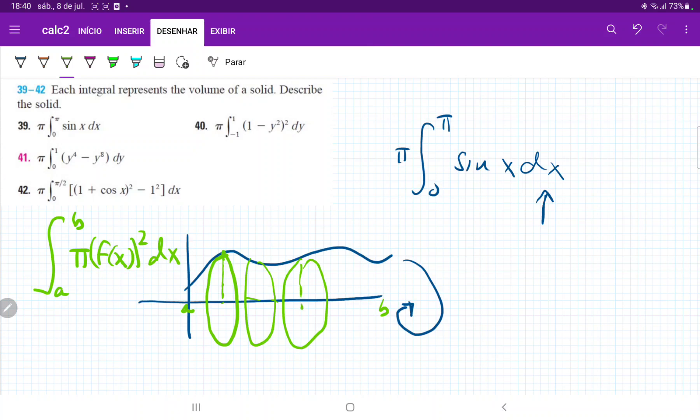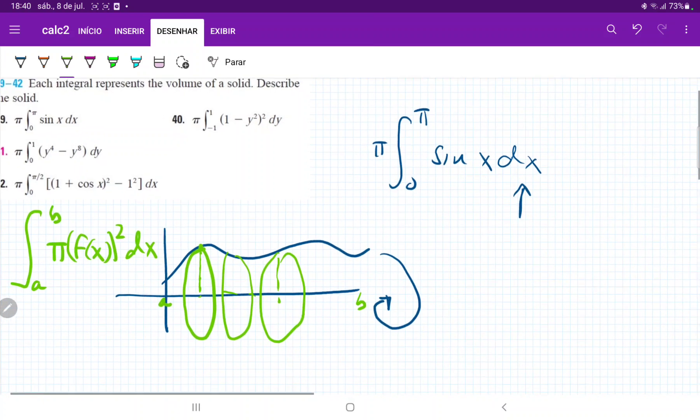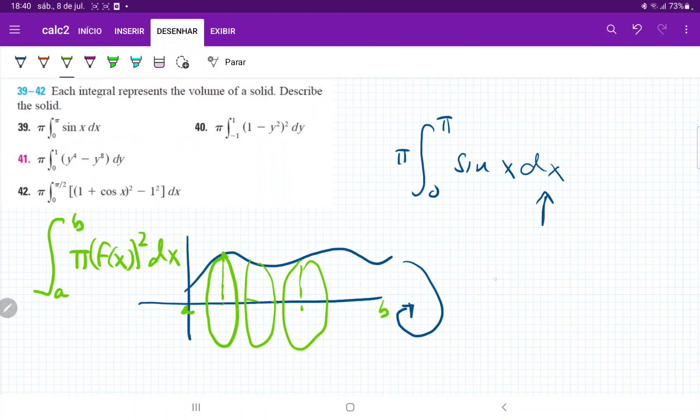So when we compare it, we can see that it's the exact same scenario where we're integrating from zero to π. And the curve here is not sine of x, but actually square root of sine of x, because this whole thing would be squared.